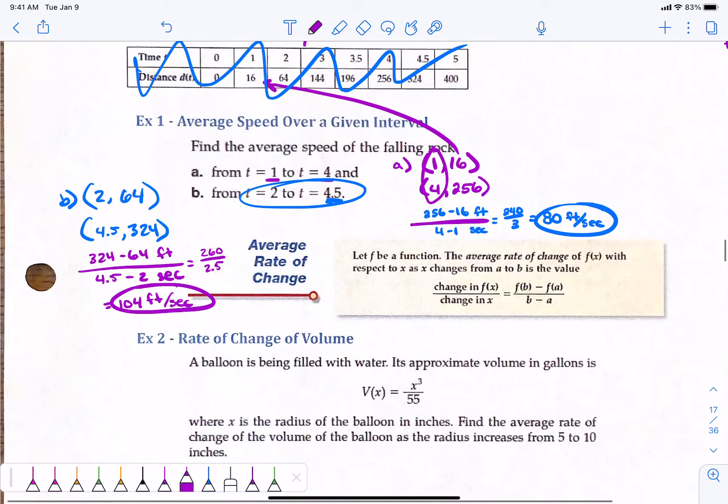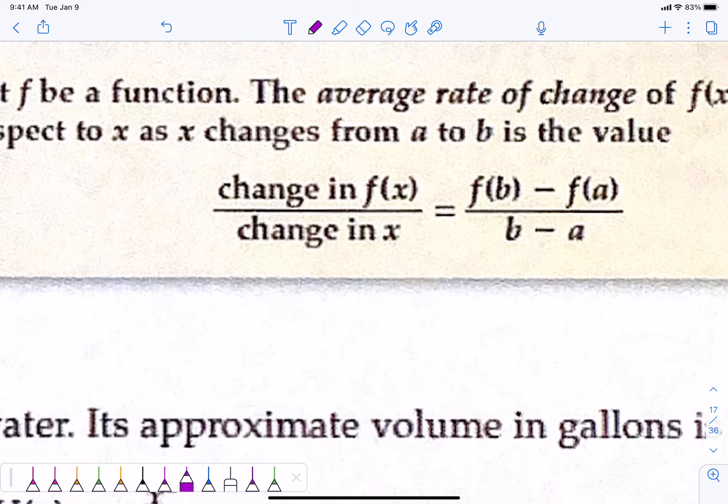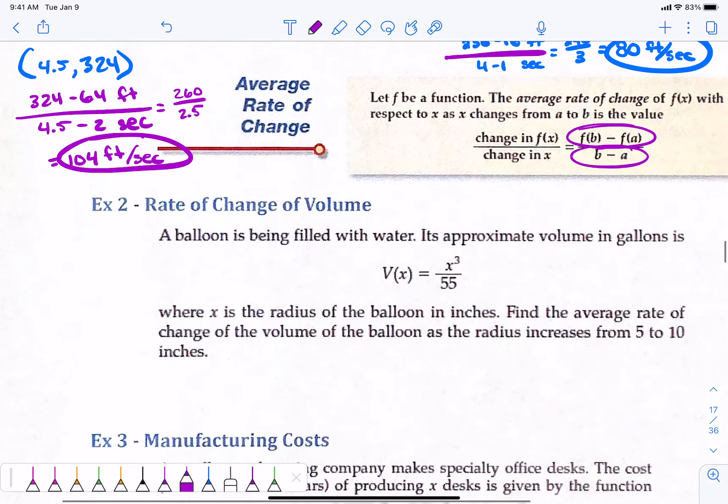Average rate of change is the change in y's over the change in x's or f of b minus f of a over b minus a. f of x2 minus f of x1 over x2 minus x1. The same thing we just did.